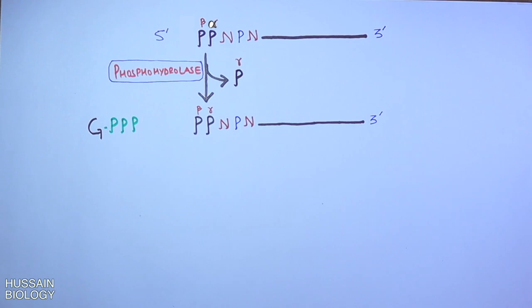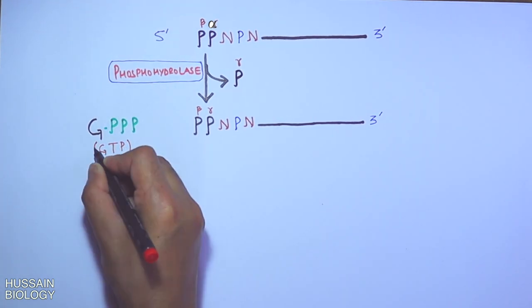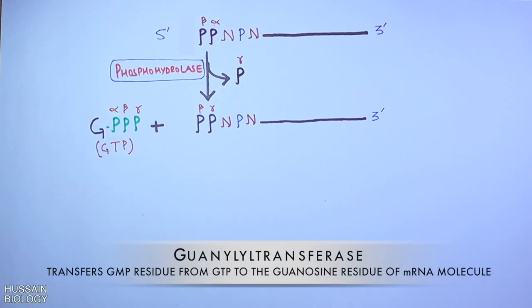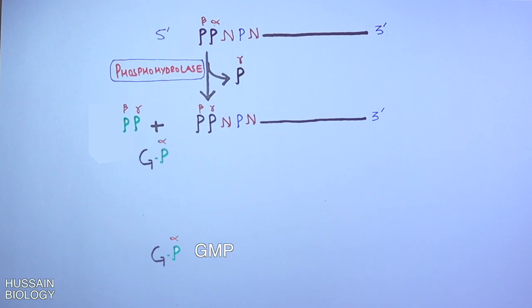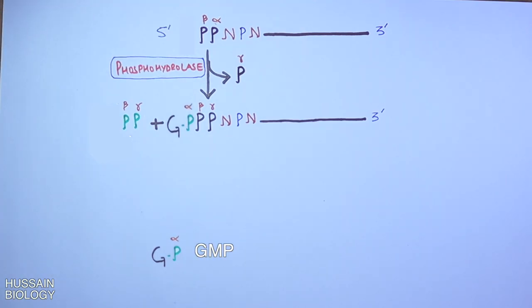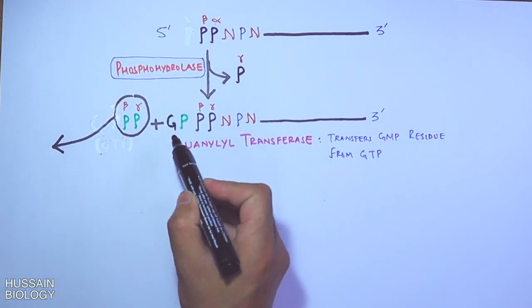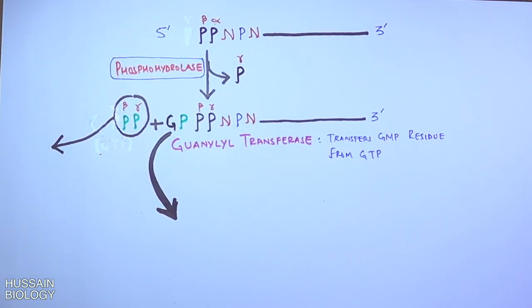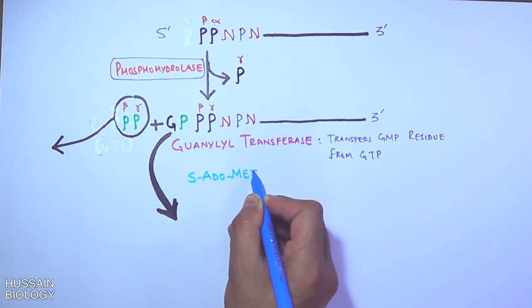Furthermore, we have a GTP molecule in this reaction with phosphates as alpha, beta, and gamma shown in the diagram. For this reaction to occur we have guanonyl transferase enzyme that transfers the GMP residue from GTP. Here we see GMP, guanosine monophosphate, is getting attached to the 5 prime end of mRNA, leaving back two phosphates.